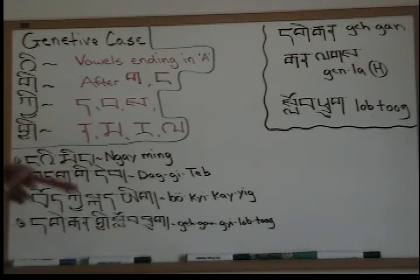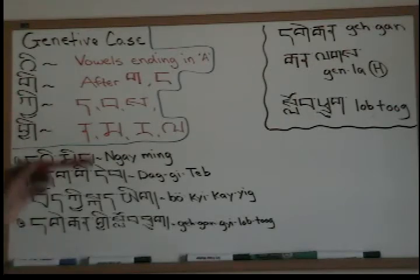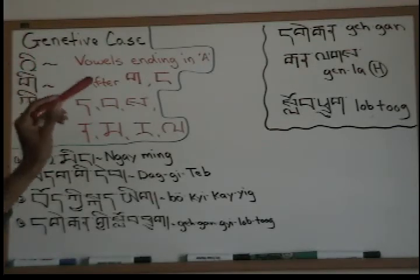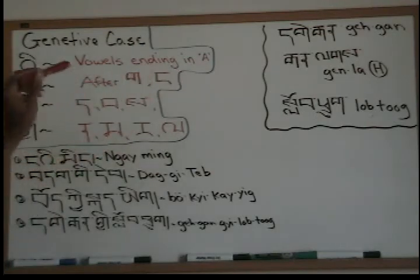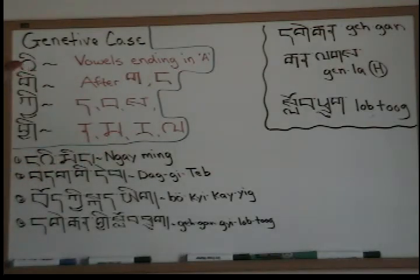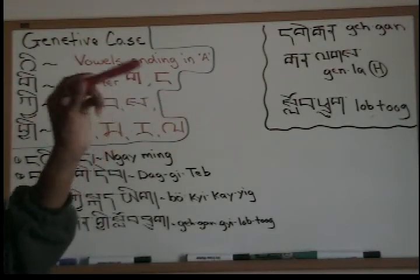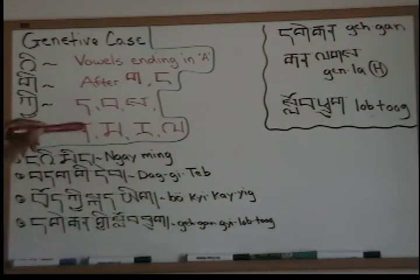So first of all, let's go through the letters and the rules here. The first one is an E, and the rule for that is any vowel ending with the A sound will take this right after it. It will be like an E after the A — it will become an E, like ngai. I'll have an example, I'll get to that.